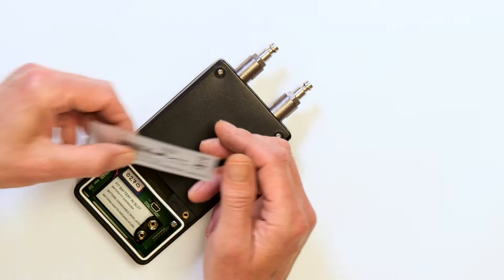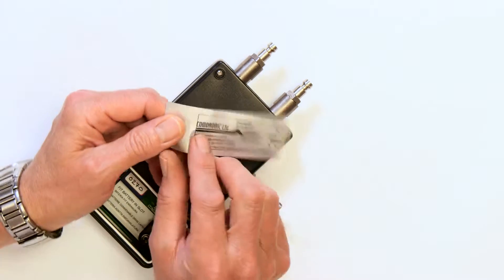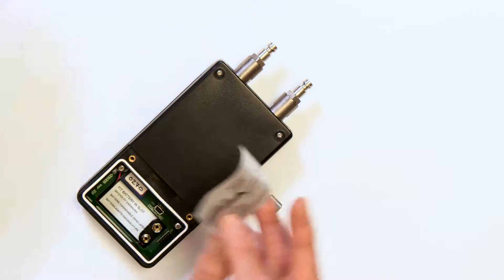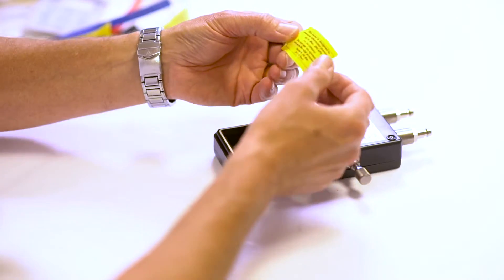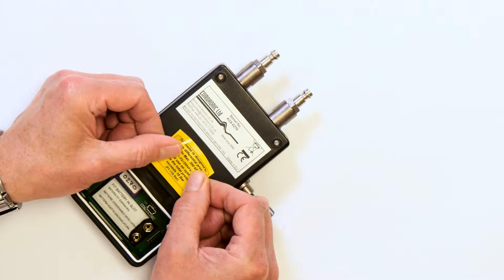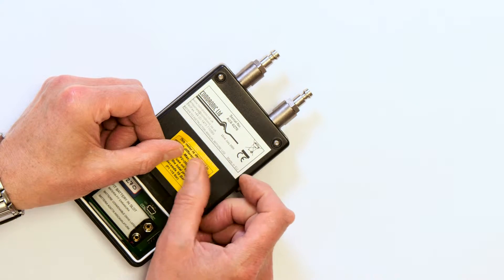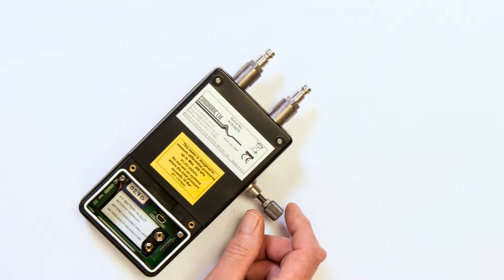So we have the identification label where we have the serial number, our contact details. That's very important to get that on. We then have the pressure rating label. So that this particular unit is designed for a maximum of 200 kilopascals differential pressure and 10 bar static pressure.